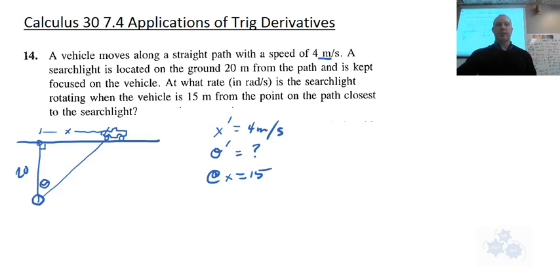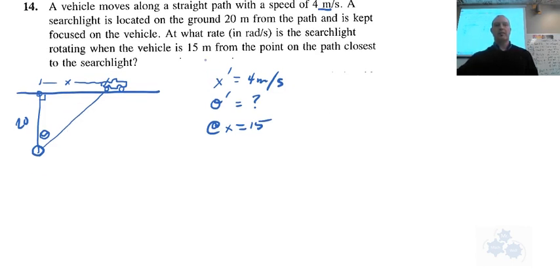Okay, so let's keep going then. So how do we relate x and theta? Because those are the rates that we're talking about in this question. So how do we relate those? Well, this is a right angle triangle. That's opposite. This is adjacent. So that's going to be tan. So tan of theta is x over 20, or x equals 20 tan theta.